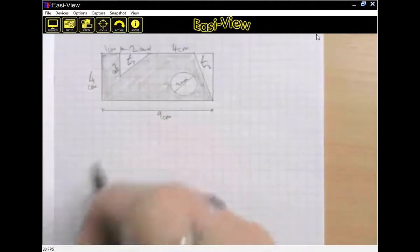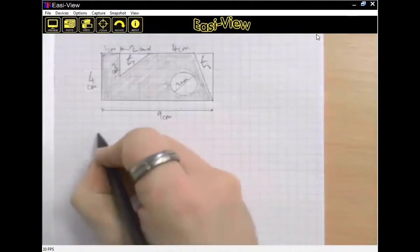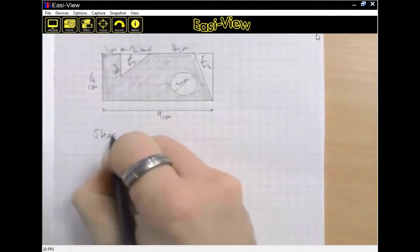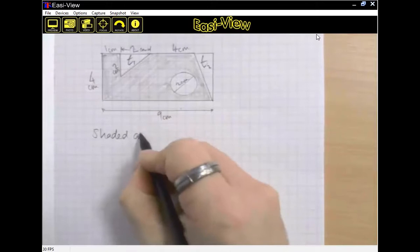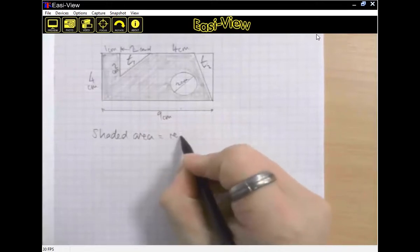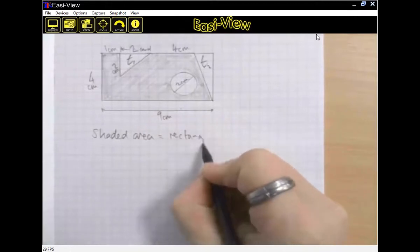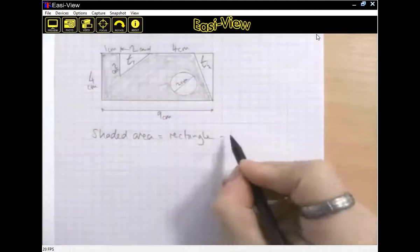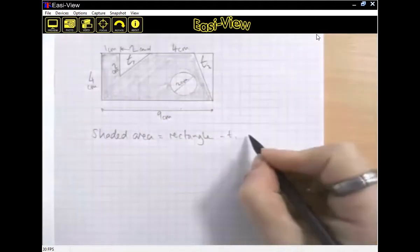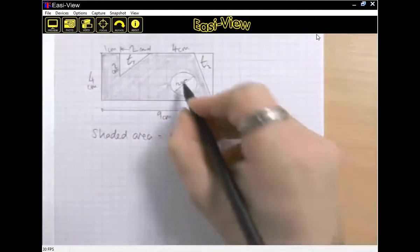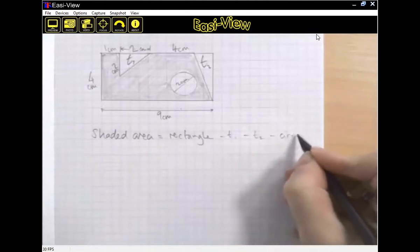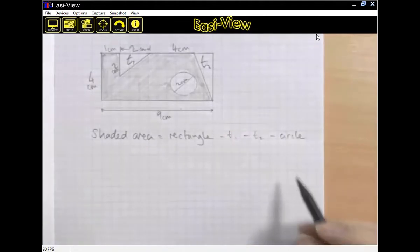So actually, this time, I think I'm just going to just clarify for myself what I'm going to do. So the shaded area is, it's the rectangle, and then I need to take off that triangle, take off that triangle, and take off that circle, and that will give me the area where I want. I'm just going to go through and do each of those bits.